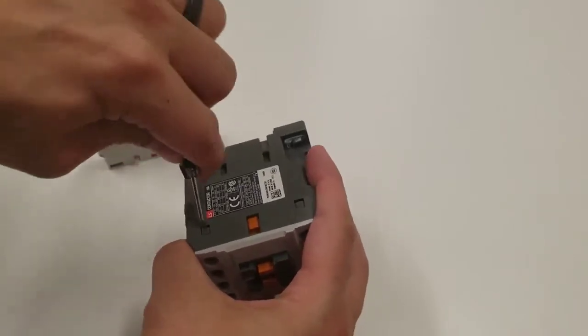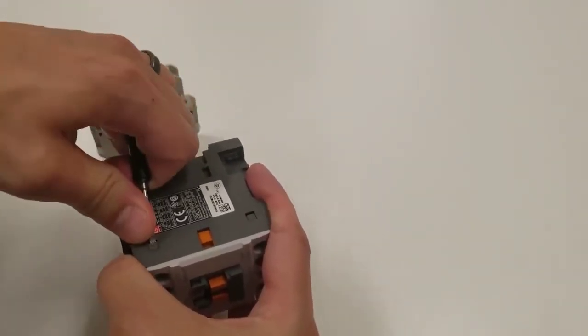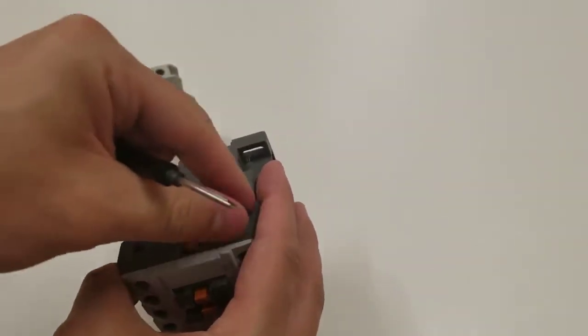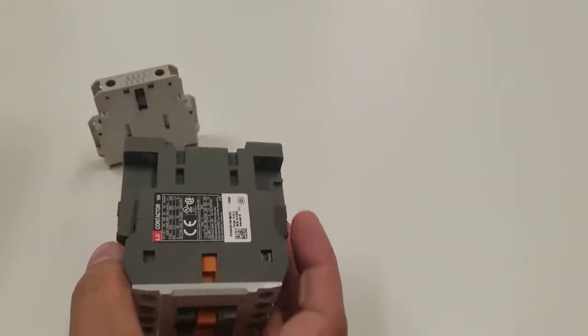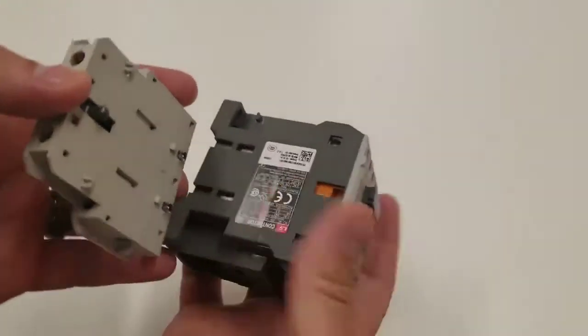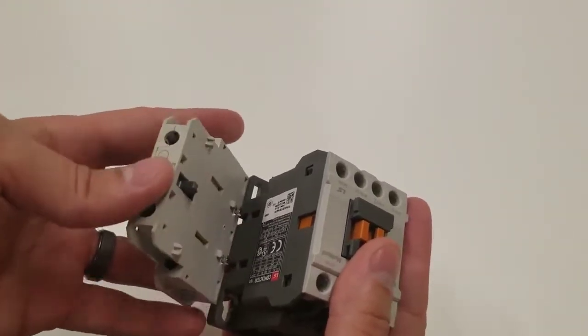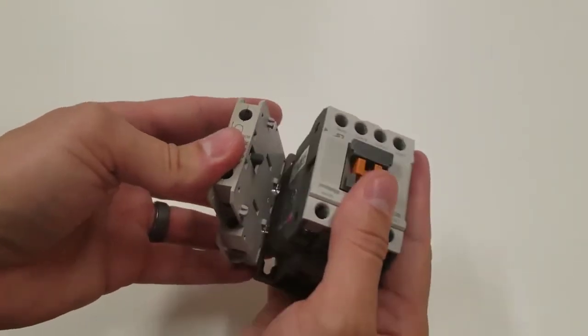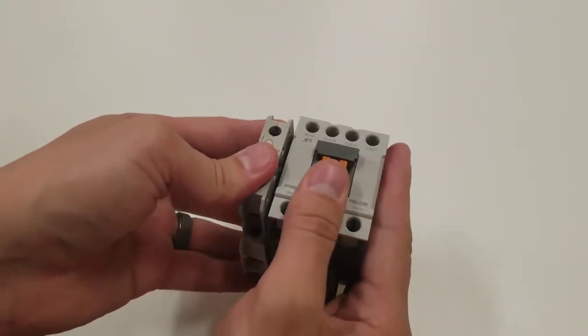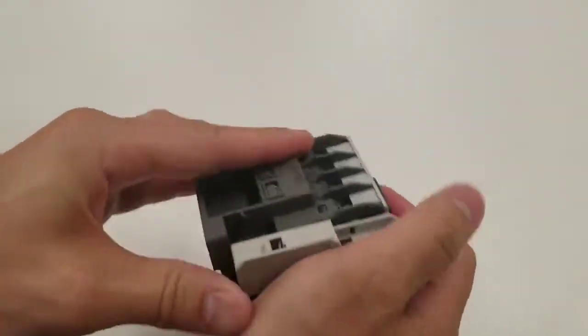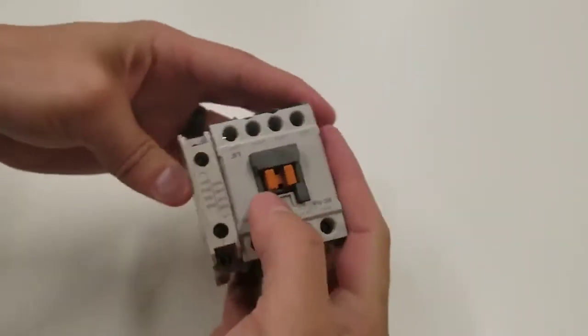So all you do is pop this out with a little flathead screwdriver. They break right out like that. You put the bottom clear part in there, which is the spring loaded part. Push it towards the top, and then it snaps right in there.